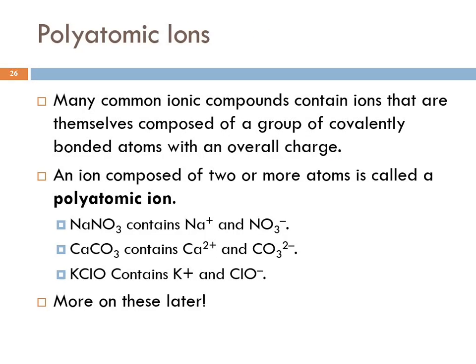Polyatomic ions — the prefix 'poly' means many — these are ions that contain many atoms. Not just a single sodium atom that's lost an electron, but multiple atoms. Many common ionic compounds have ions that are themselves composed of a group of covalently bonded atoms with an overall charge. You could think of these as a molecule that's gone to the dark side — the atoms are covalently bonded together, but the whole cluster has either gained or lost electrons and become an ion. Those are called polyatomic ions, and we'll see these in ionic compounds.